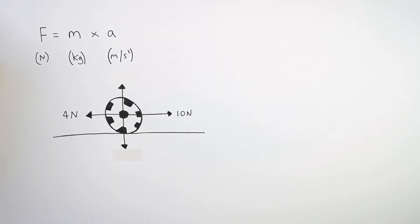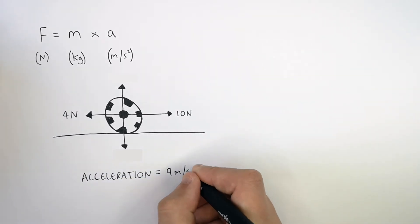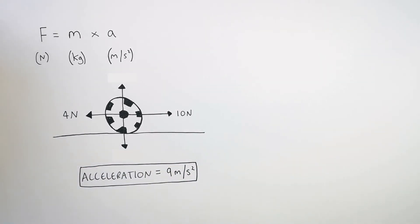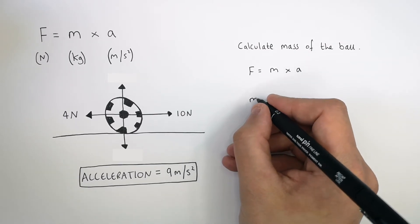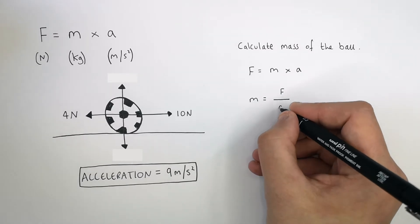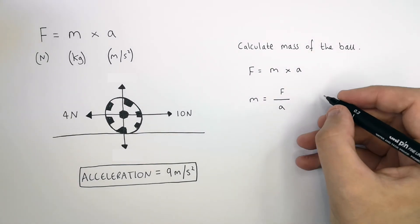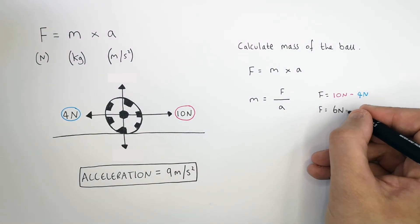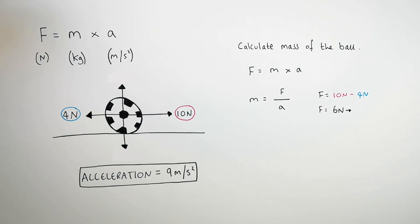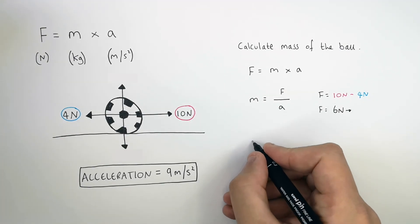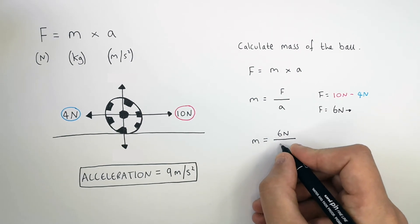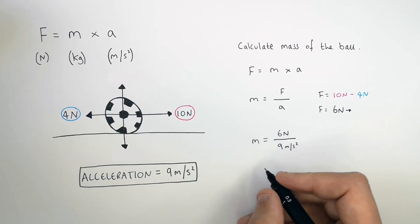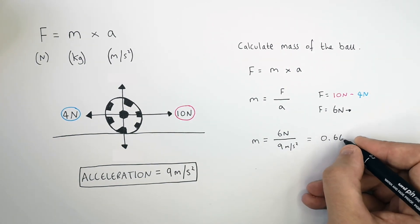Using the information in the diagram, we can calculate the resultant force and, with the acceleration given, work out the mass of the ball. Rearranging F equals MA gives M equals F divided by A. The resultant force is 10 newtons minus 4 newtons, which equals 6 newtons, and the acceleration is 9 meters per second squared. So M equals 6 newtons divided by 9 meters per second squared, giving a mass of 0.667 kilograms.